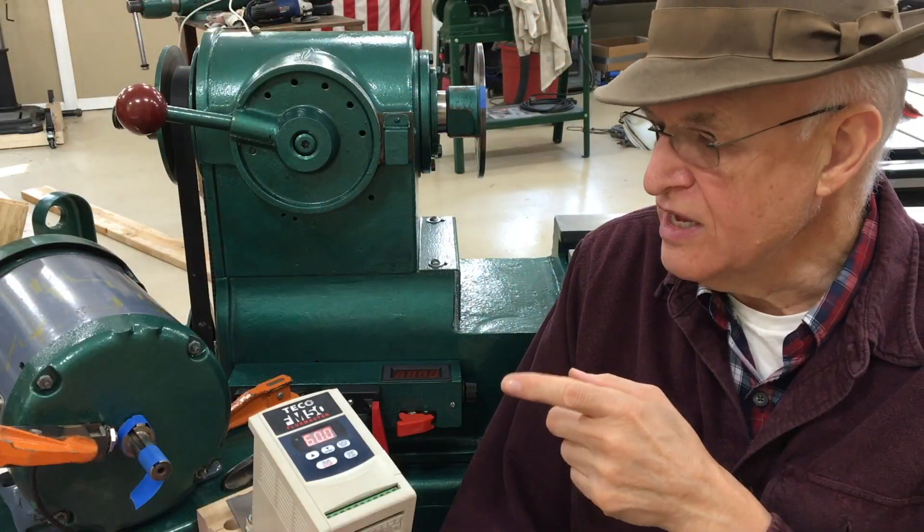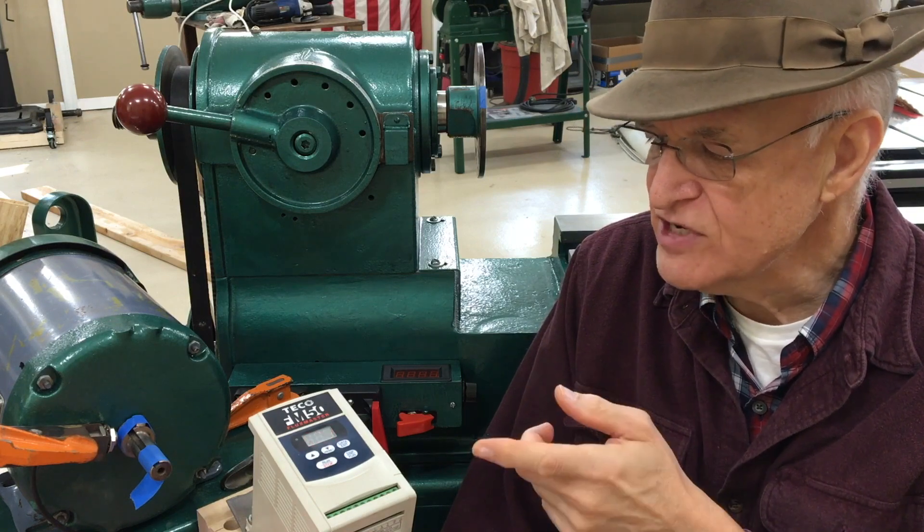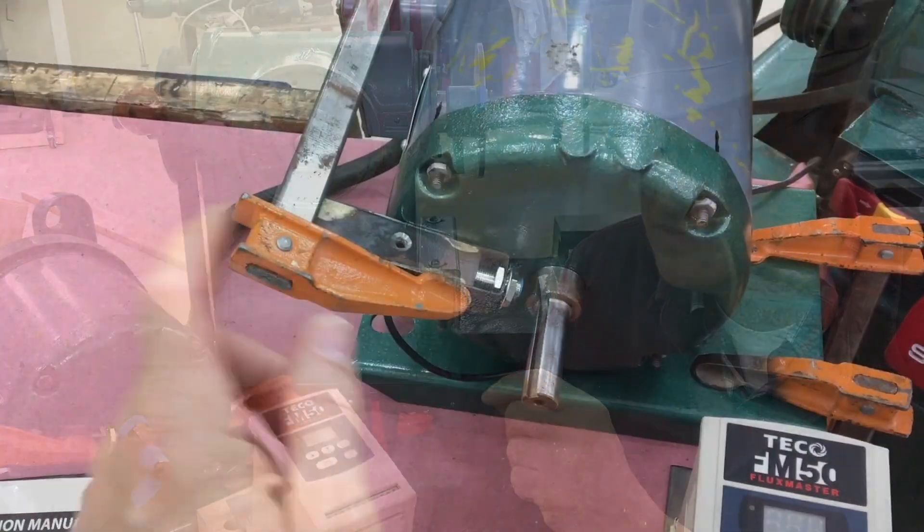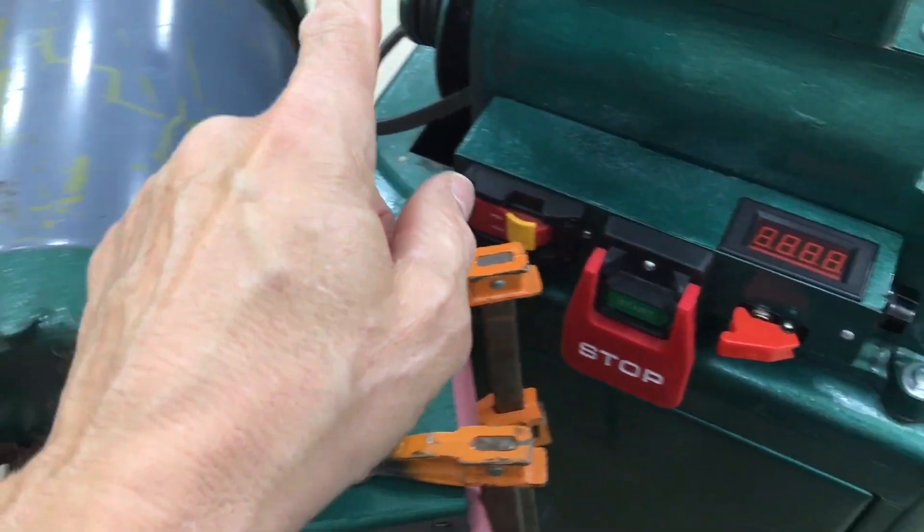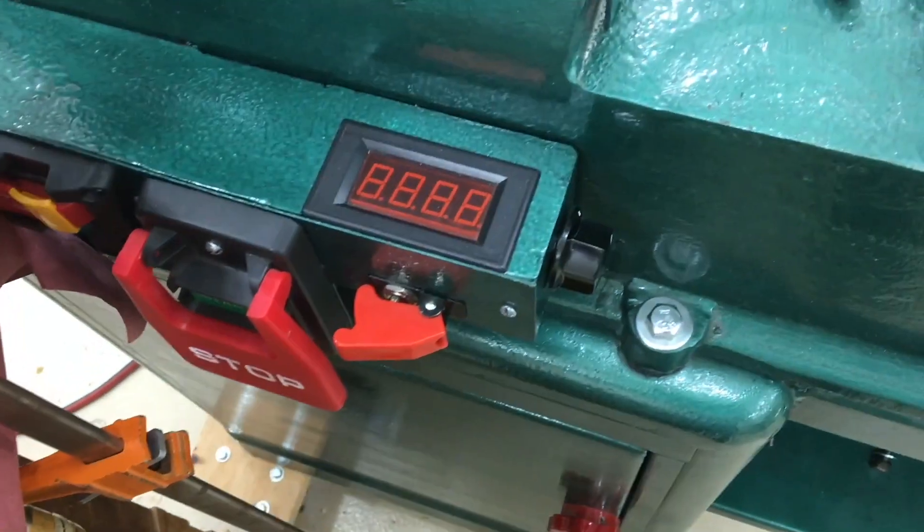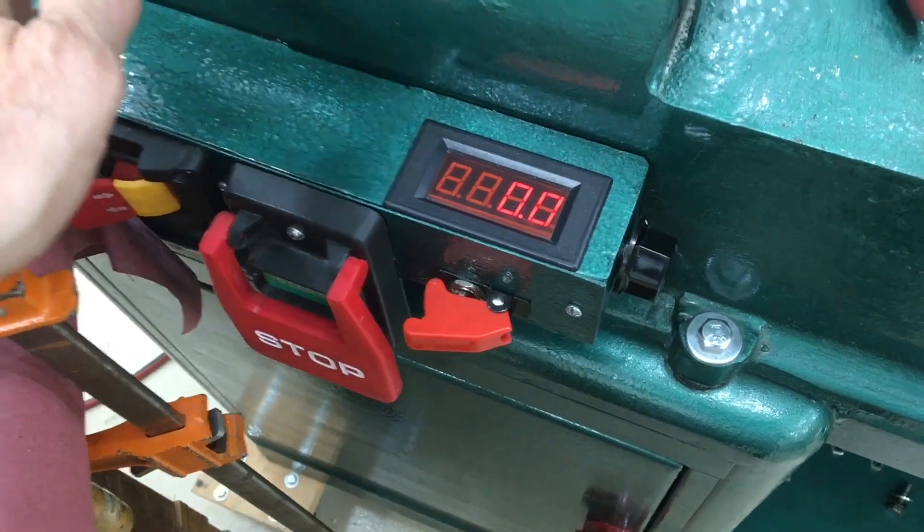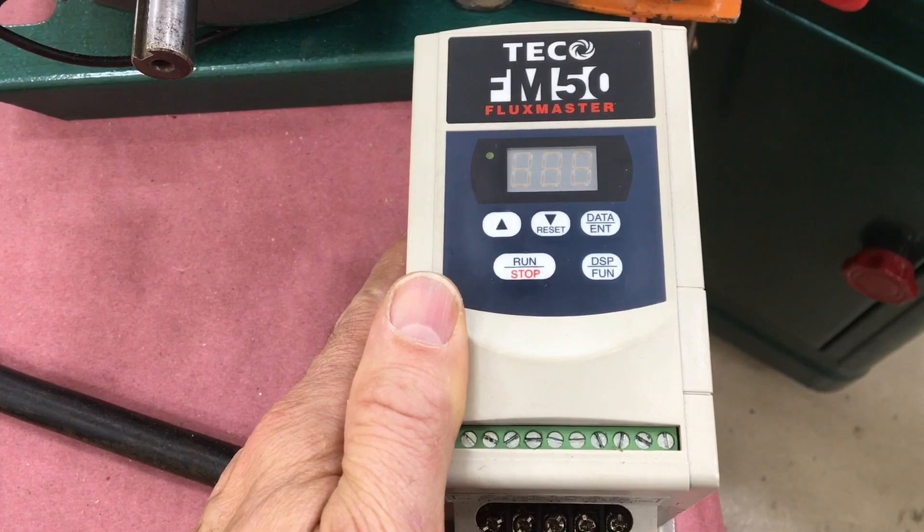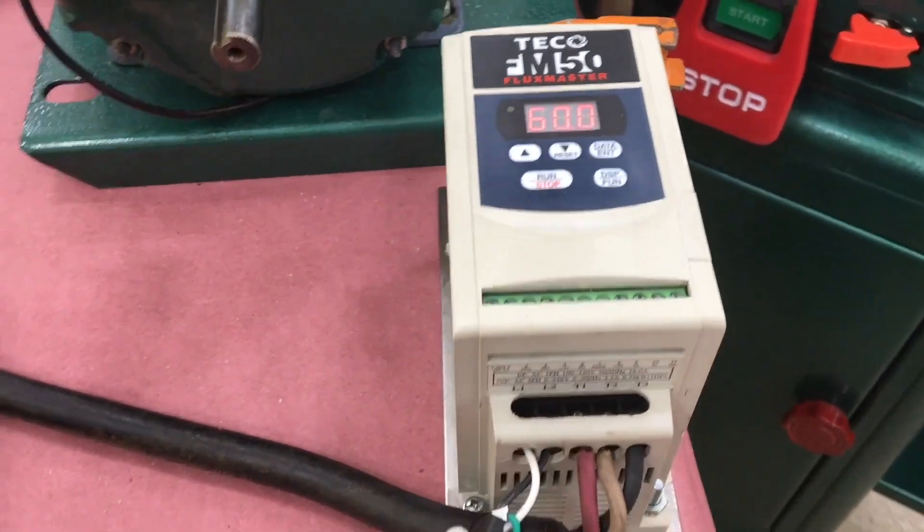Well, I have the VFD and the motor out of the machine sitting on the bench and that will give us a better view of how the thing works. I moved the RPM sensor off of the spindle and I put it on the motor so we could see how fast the motor is running. So the RPM display is still sitting on the machine. And this is the VFD. It's a pretty simple setup really.